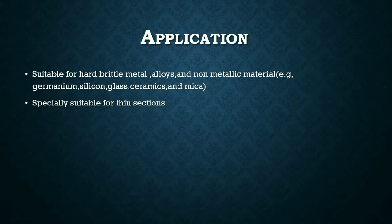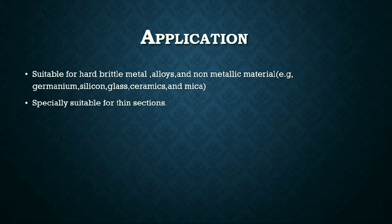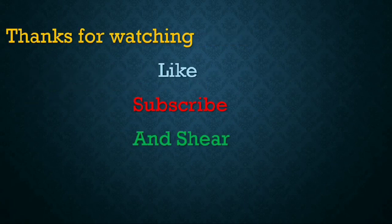Abrasive jet machining is generally suitable for hard and brittle materials, alloys, and non-metallic materials such as germanium, silicon, glass, ceramic, and mica. This process is also suitable for very thin sections, as the whole process is performed without danger of breaking. So generally we use abrasive jet machining for thin sections. That is all about abrasive jet machining — thank you for watching.